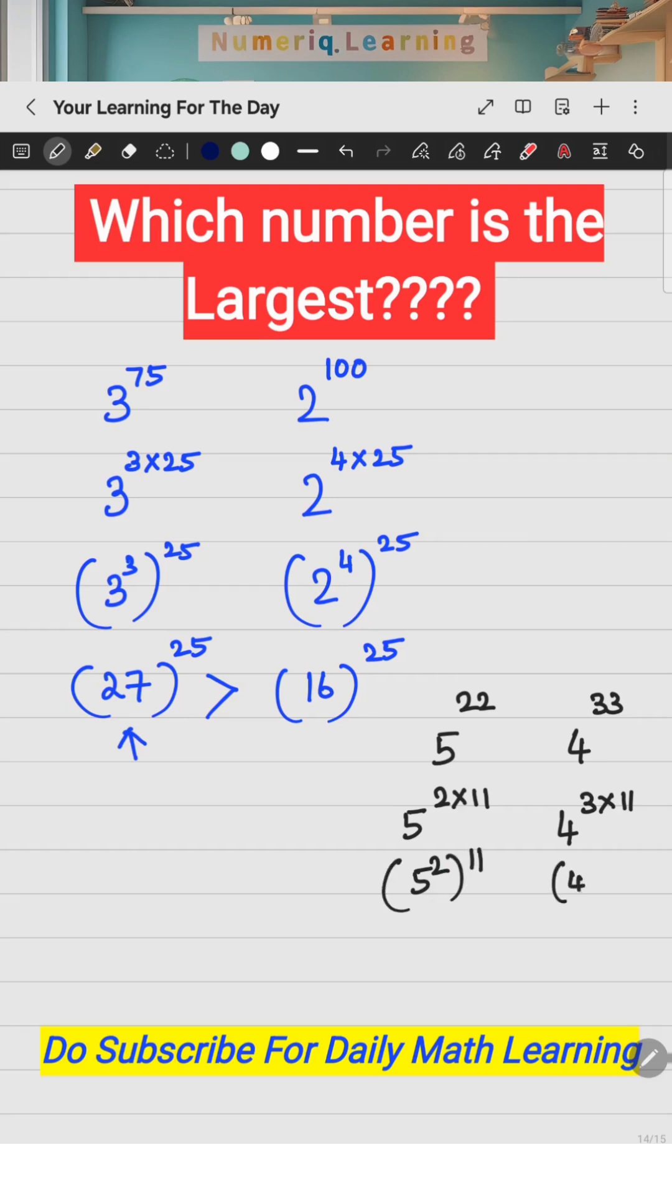5 square is 25 raised to the power 11, and this is nothing but 4 cube is 64 whole raised to the power 11. Now automatically you will know which is biggest: 64 raised to the power 11 is the biggest.